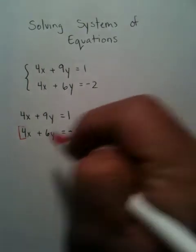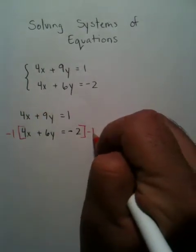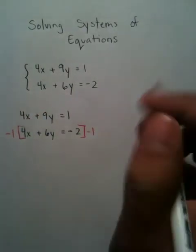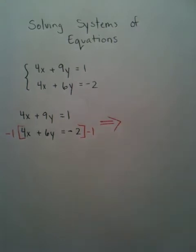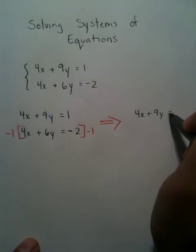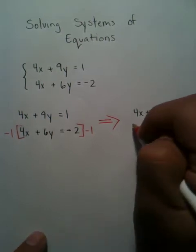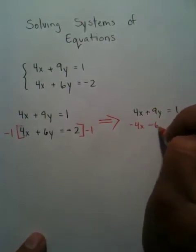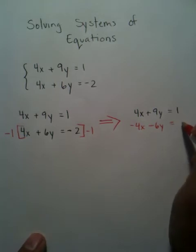If I change this right here by multiplying it by negative 1, I'll be able to rewrite the problem. And the problem will look like this: negative 4x minus 6y equals positive 2.